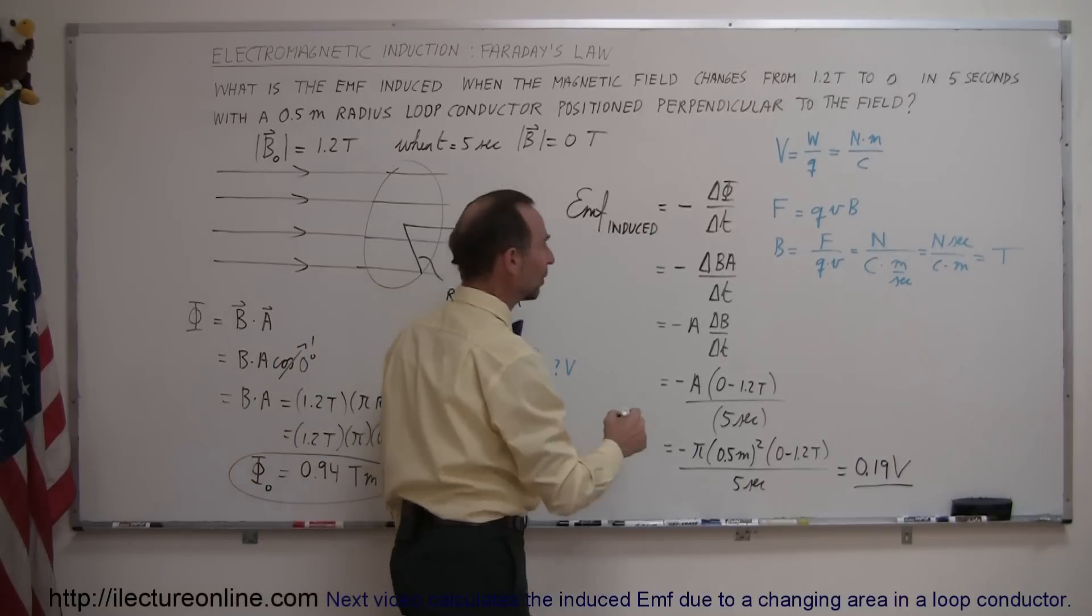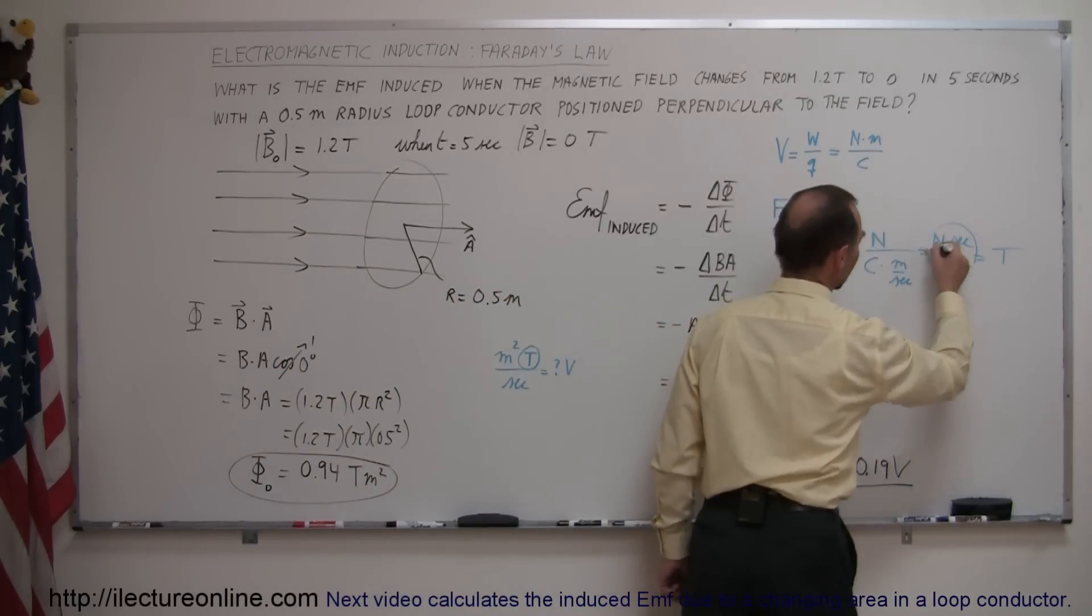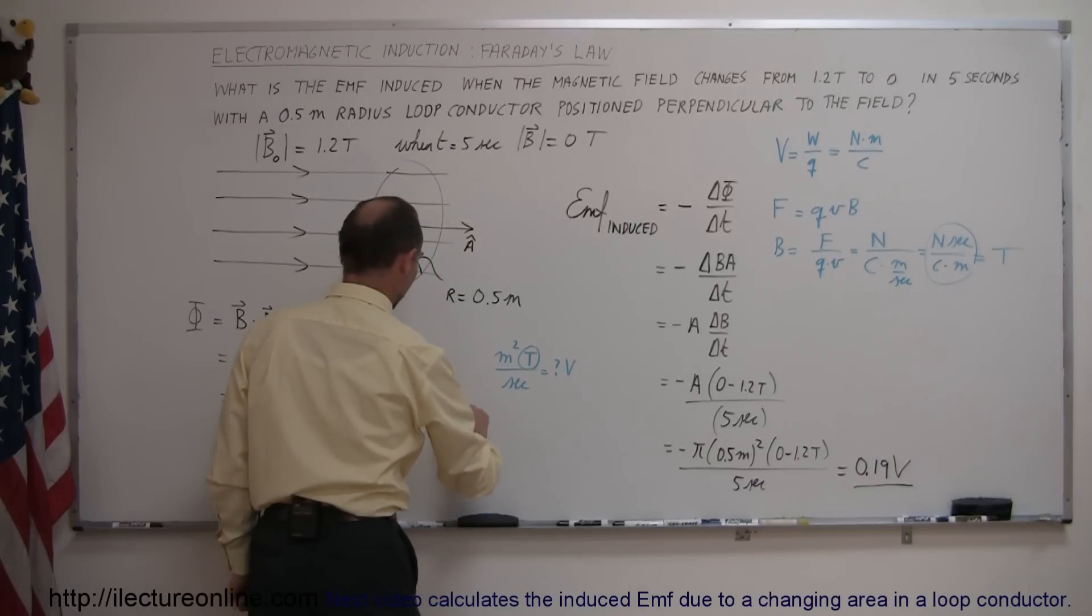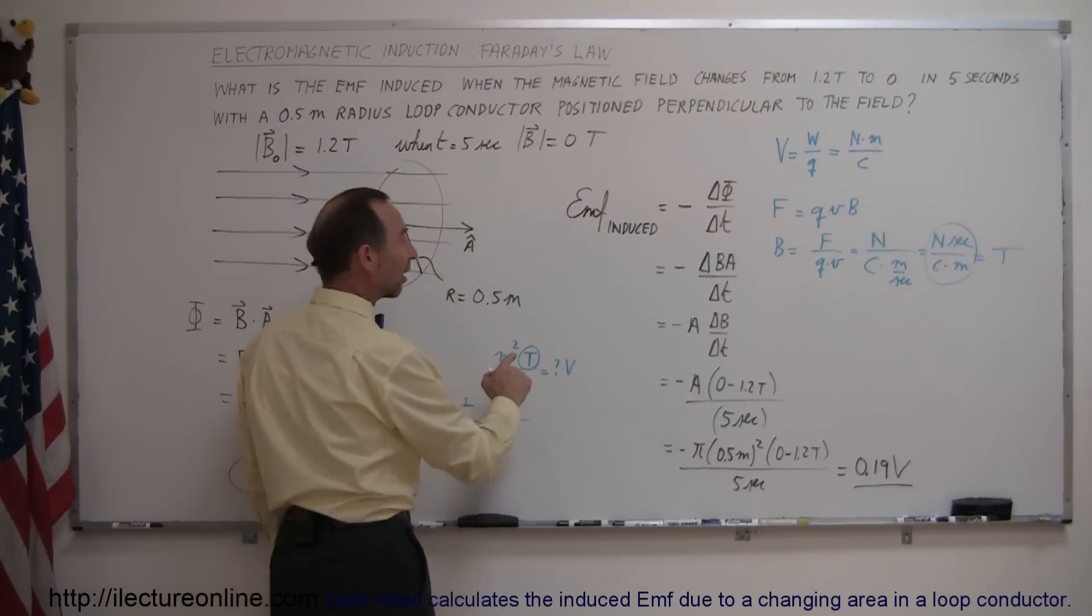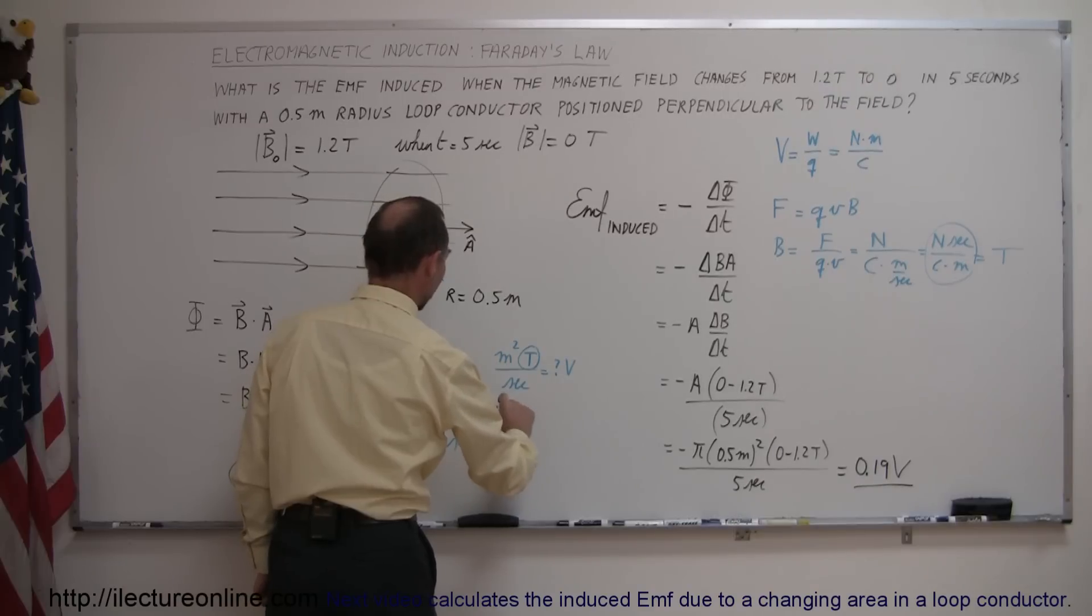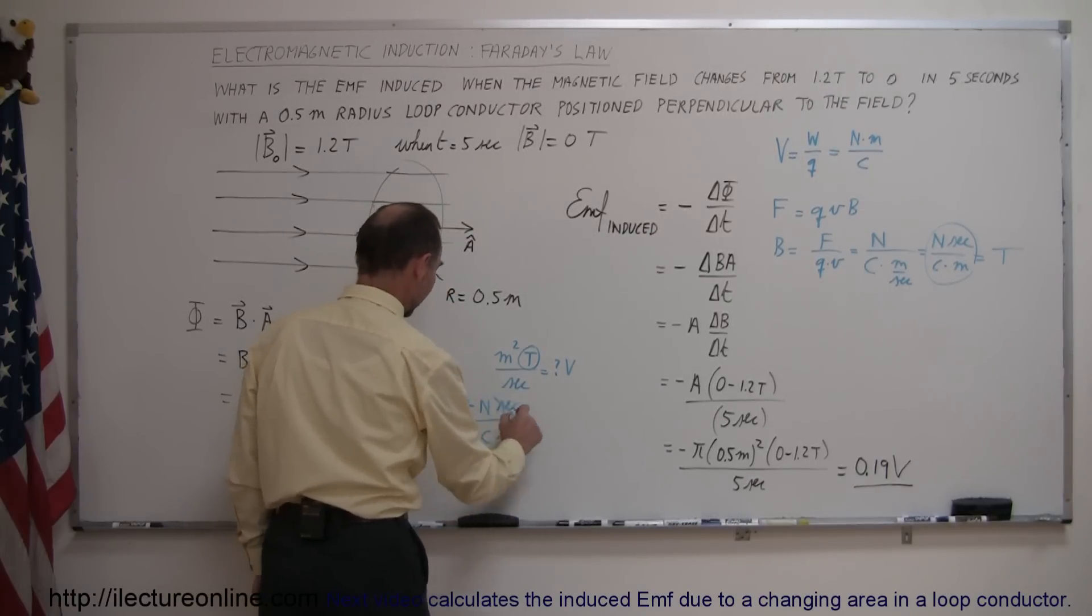So instead of teslas, we're now going to write what teslas are equal to. So we have meters squared divided by seconds times teslas, and teslas is a newton times seconds divided by coulombs times meters. And, of course, the seconds cancel out, one of these meters cancel out,